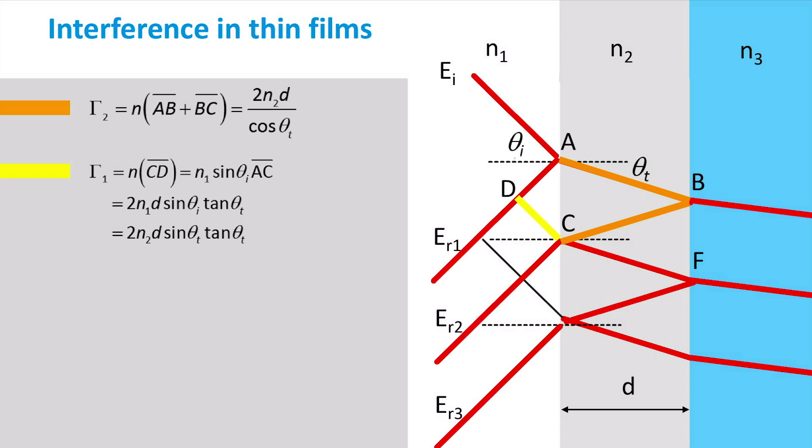The optical path length of wave 1 simply equals the refractive index N1 multiplied by the distance Cd. It follows from the geometrical relations that Cd equals AC times the sine of theta I.